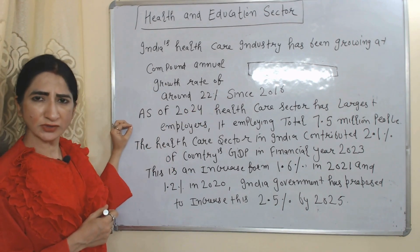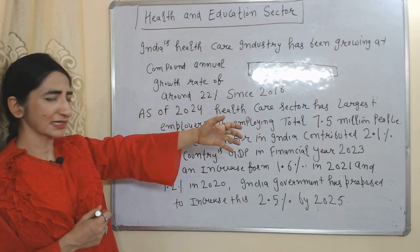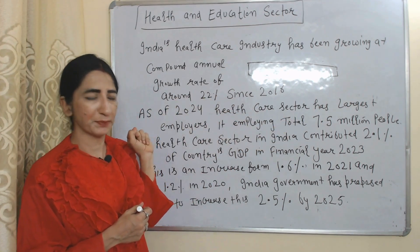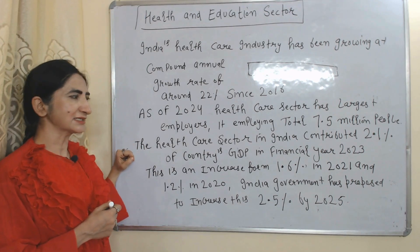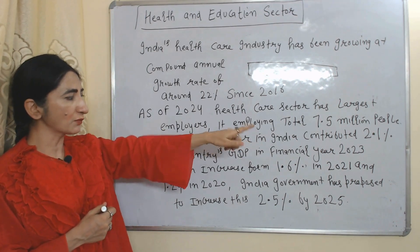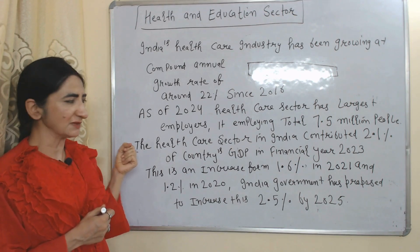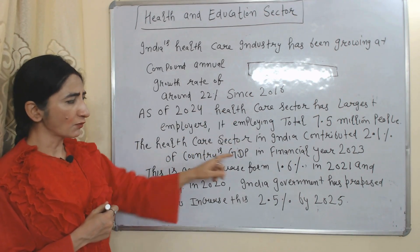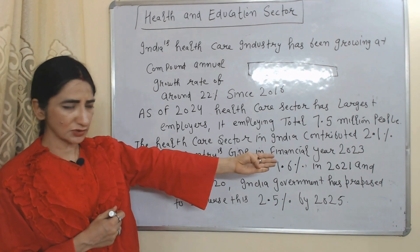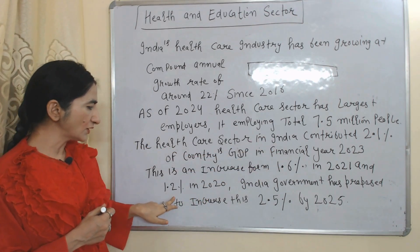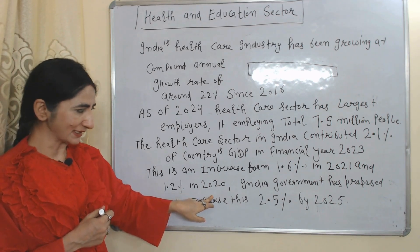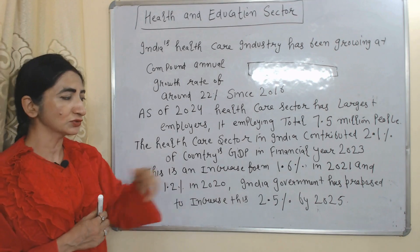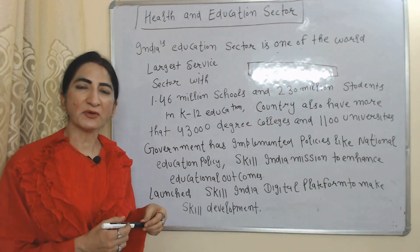As of 2024, the healthcare sector is one of the largest employers, employing a total of 7.5 million people. The healthcare sector in India contributed 2.1% of the country's GDP in financial year 2023, up from 1.6% in 2021 and 1.2% in 2020. The government has proposed to increase this to 2.5% by 2025.